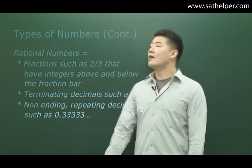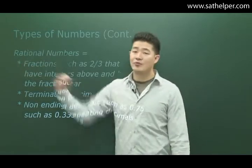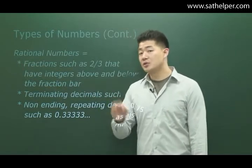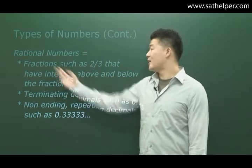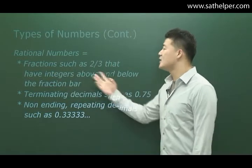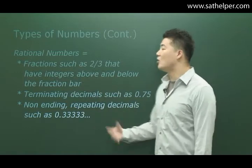Now rational numbers. Rational numbers actually comes from the name ratio, which most of the time means a fraction. Therefore, rational numbers, as I said, are fractions such as 2/3 that have integers above and below the fraction bar.